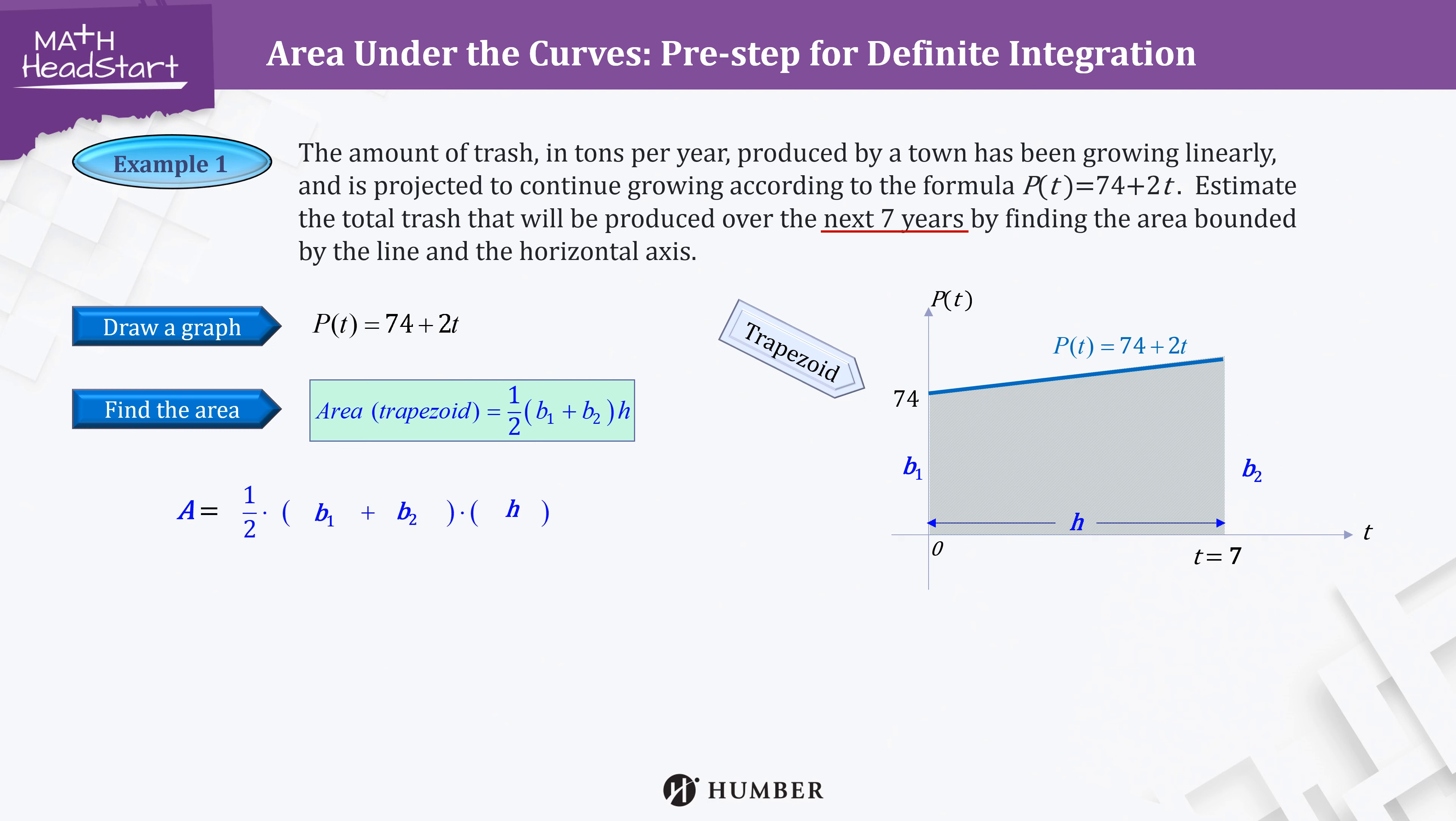Let's substitute each value into the formula then. The length of the base one should be 74 as the y-intercept is 74, and the other base should be the y-value or P(7) value. So, substituting t = 7 into P(t) function, we get 88. And the height h is 7 of course. We then calculate it to get the area as 567. So, the total amount of trash over 7 years is 567 tons.